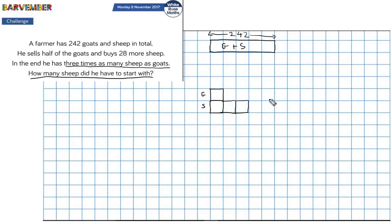Okay, let's see if we can populate this with some numbers. Well, it said I had 242 goats and sheep in the beginning. Is this 242? Well, no, because he sold half of the goats and buys 28 more sheep.